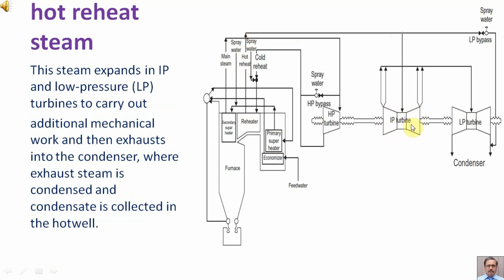The steam expands in the intermediate pressure and low pressure turbines to carry out additional mechanical work, and then exhausts into the condenser where the exhaust steam is condensed. The condensate is collected in the hot well.